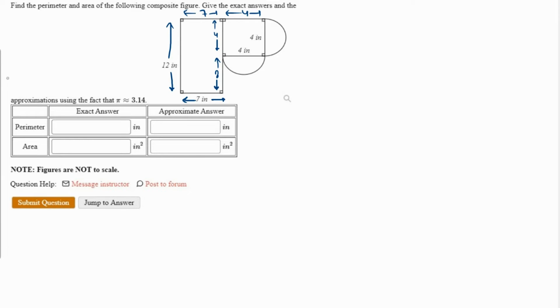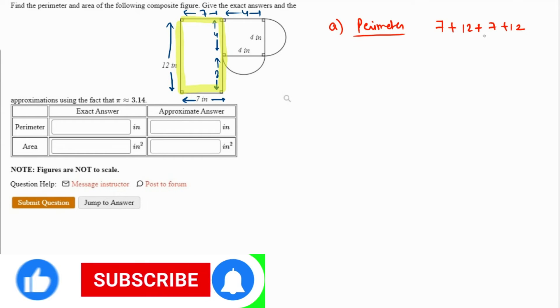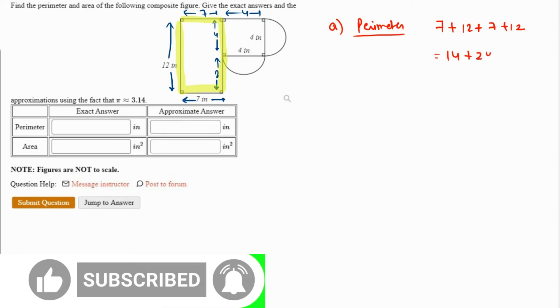So the perimeter will be, I'm going to highlight whichever I'm going to add. First I'm going to add these four edges because perimeter is the sum of all the edges. So I'm talking about part a, perimeter. For perimeter, I'm going to add the ones which I just shaded. So that's 7 plus 12 plus 7 plus 12, because this complete is also 12, which will give me 14 plus 24, which is 38.